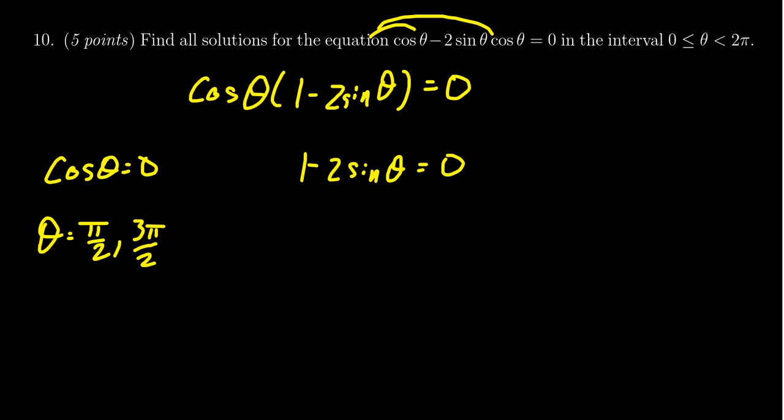For the second equation, subtract 1 from both sides to get -2sin(θ) = -1. Divide both sides by -2, and we get sin(θ) = 1/2.